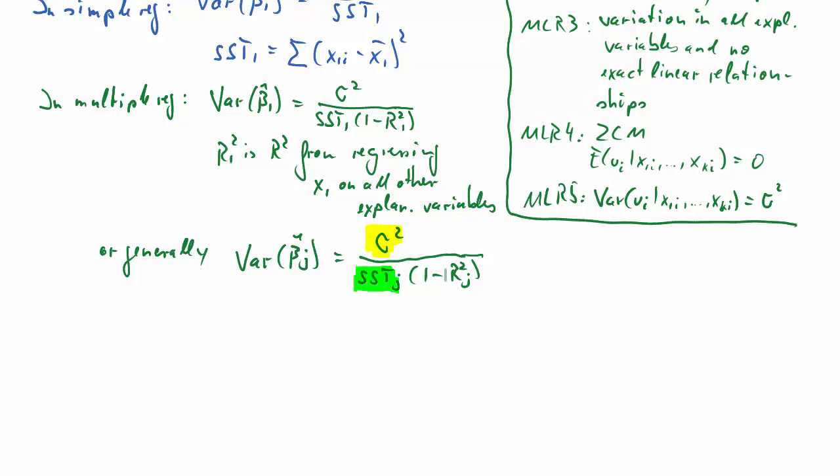So when we look at this formula, we can think of there being three elements in here. The first being sigma squared. That is, of course, just the error variance.